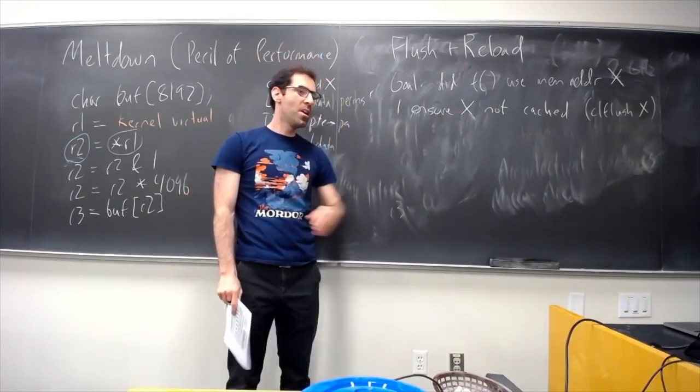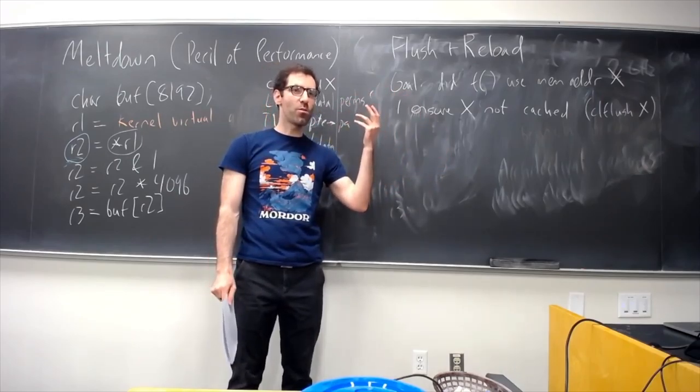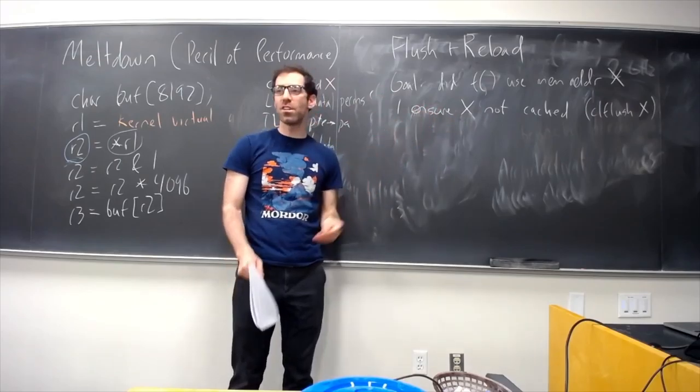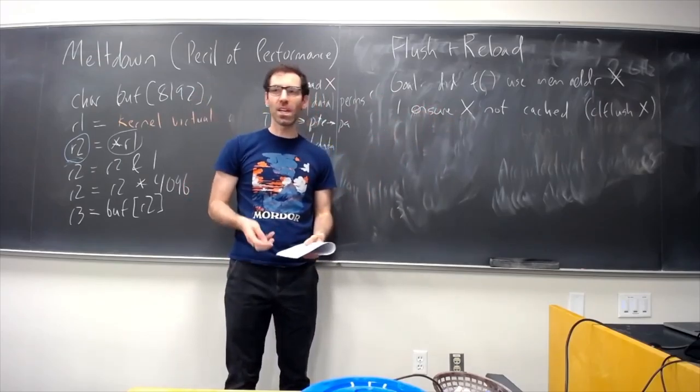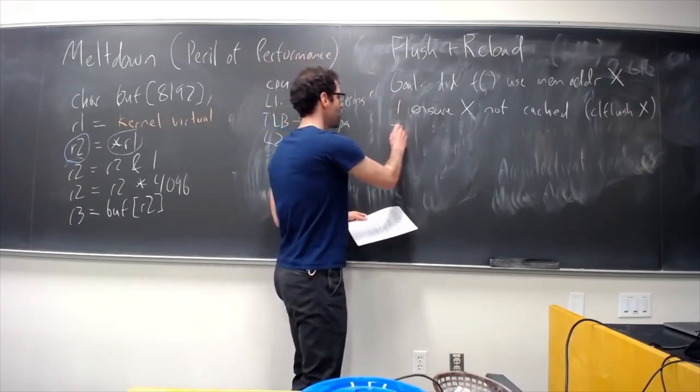If we didn't have this instruction, anyone have an idea of how we could ensure that x was not in the cache? Should we load a lot of data? Yeah. Where our cache has, like, 64 slots. We load 64 random things. You know, x has to have been kicked out of the cache. All right. So, we ensure x is not in the cache.